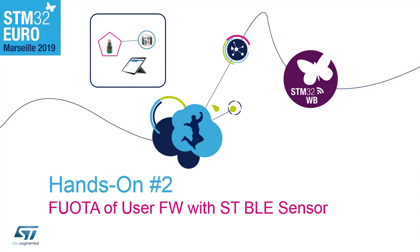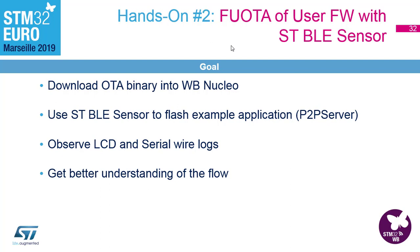Let's go through the firmware upgrade over the air. We will start by downloading the OTA application with the ST-Link, then we will use our phones with the ST BLE Sensor app to download the very first application into the flash.